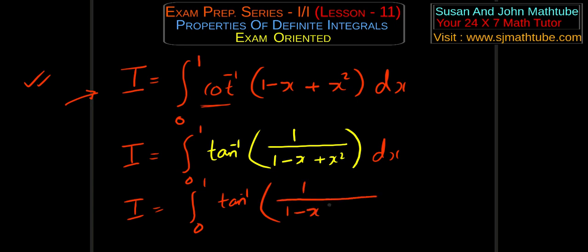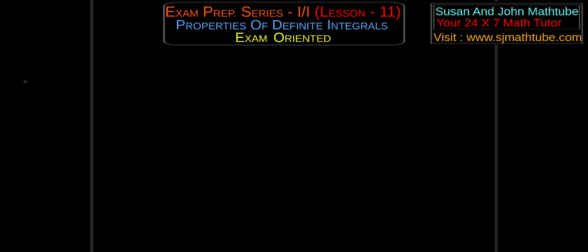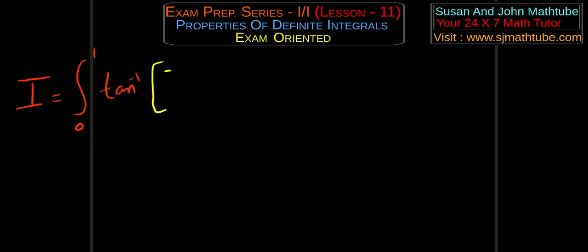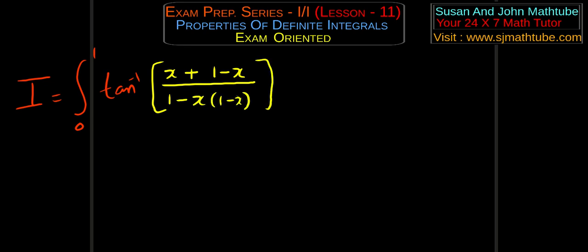Next, factor the denominator: 1 − x + x² = x(1−x) + ... We write i = ∫₀¹ tan⁻¹[1/(1−x+x²)] dx. The key step is to look at the numerator 1 and change it using x and (1−x). The denominator 1 − x + x² can be recognized as 1 − x(1−x).